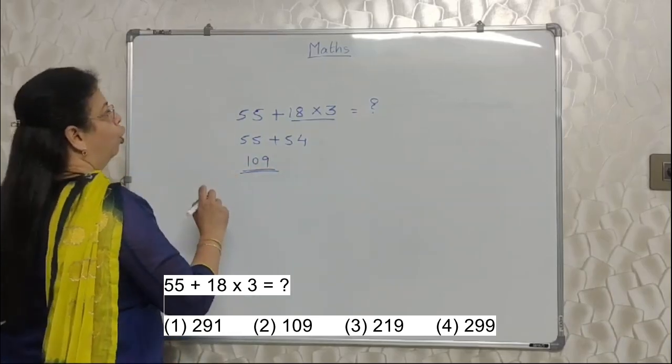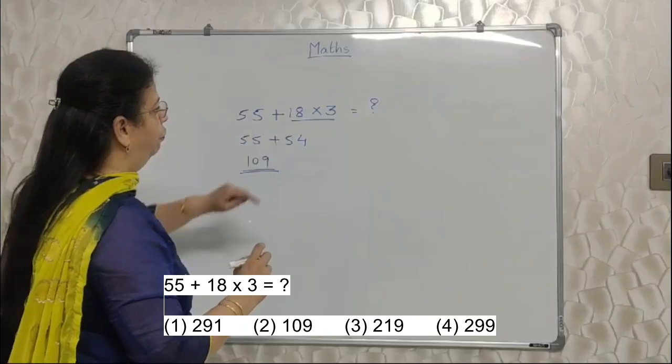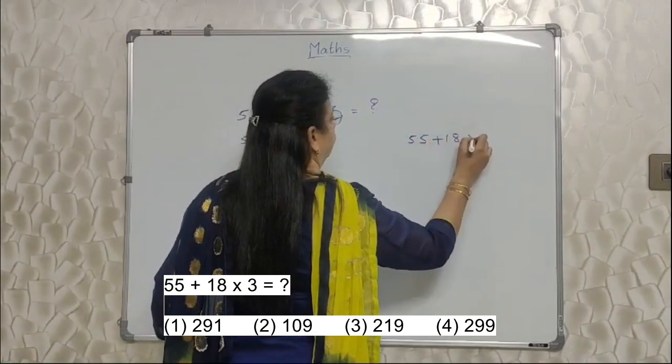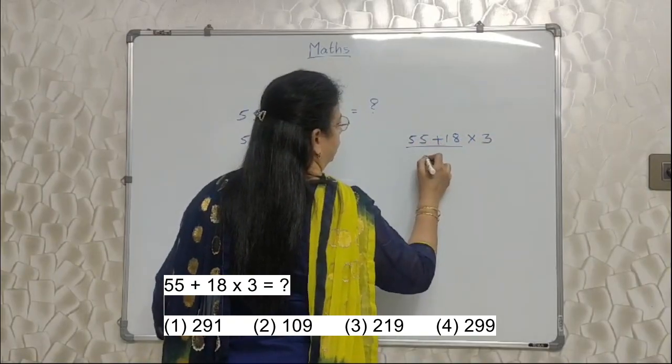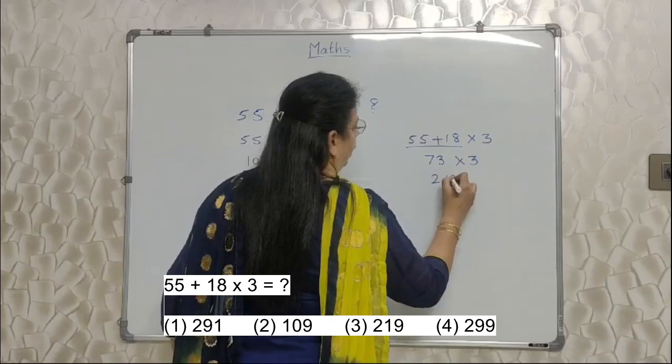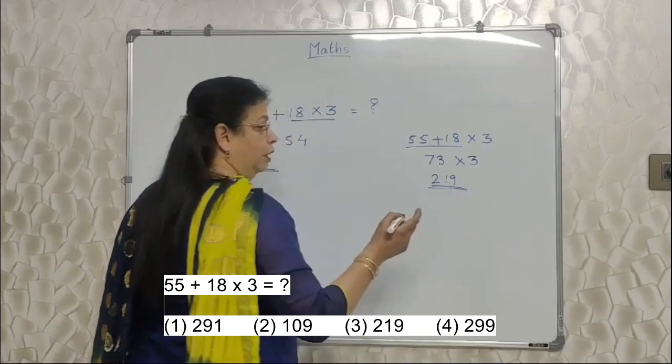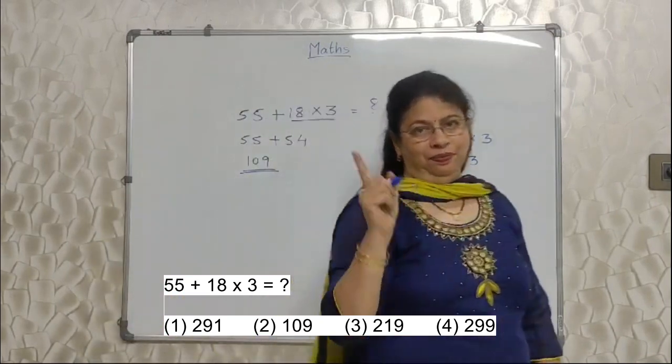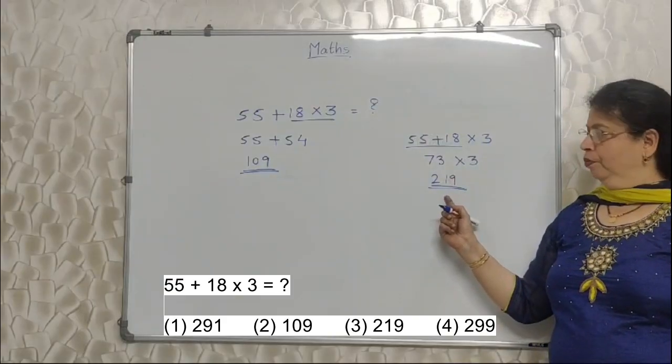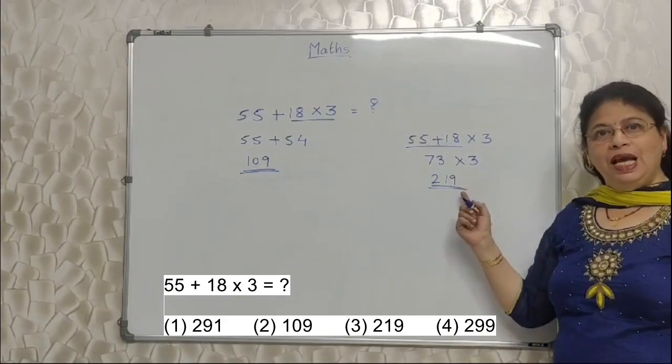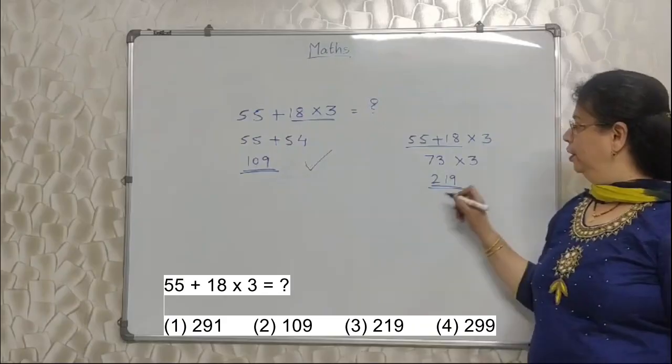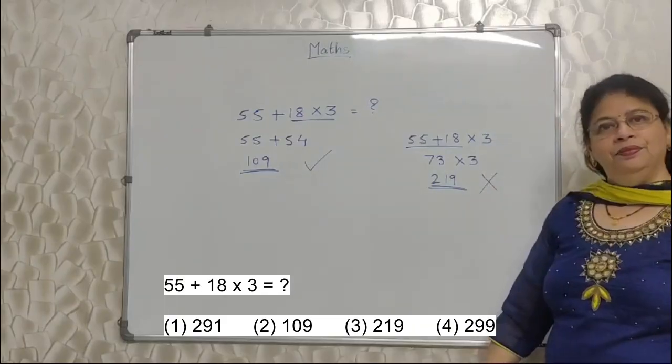If we do not follow this BODMAS rule and if we do this 55 plus 18 first, if we do this first, this is 73 into 3. If we do later, 219, this option will be 1000% there. And students get this who do not know the BODMAS rule, and they are very happy, option is there, so I have got two marks. No. It has to be solved this way. This is correct, this is wrong. Got me?